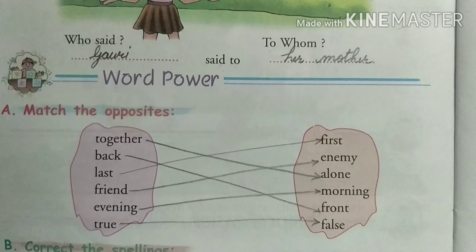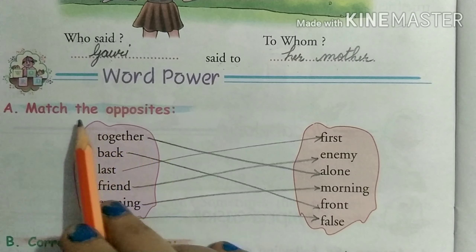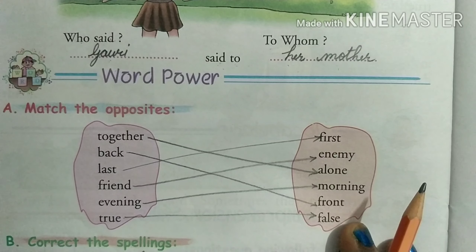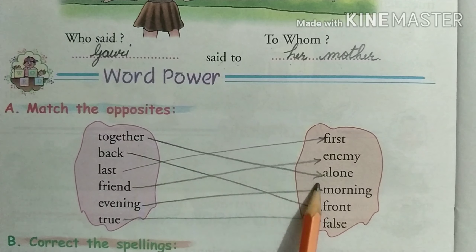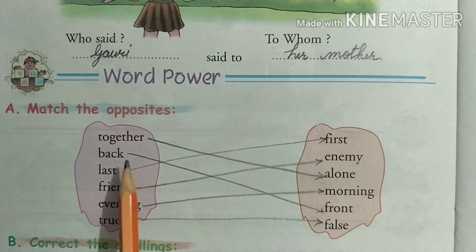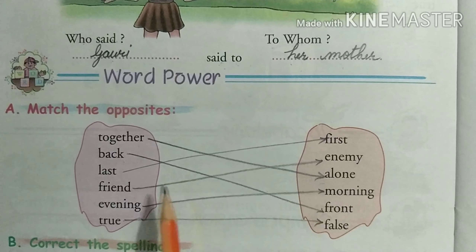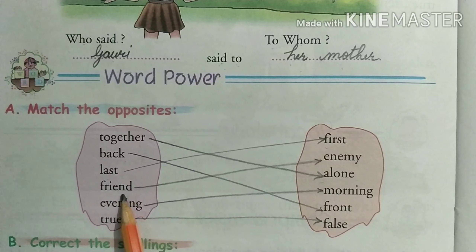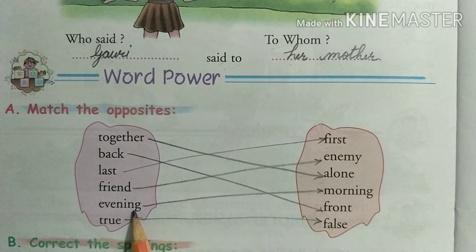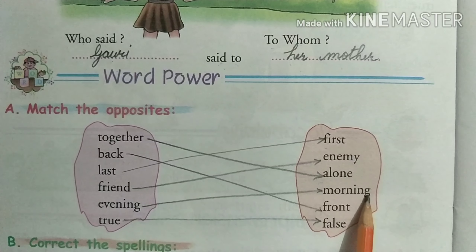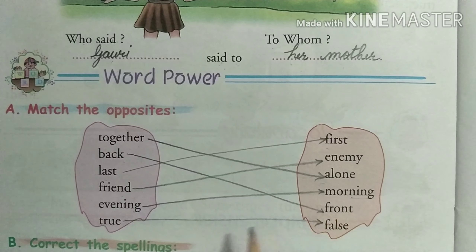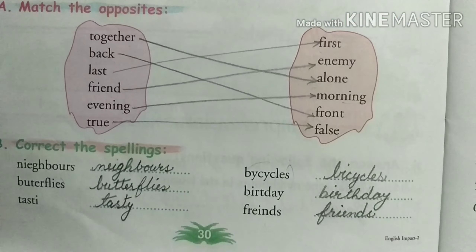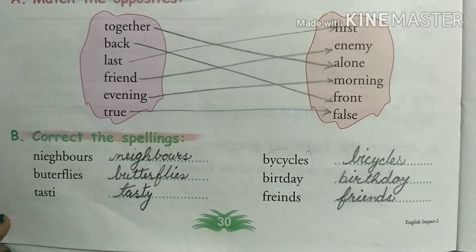Word power — match the opposites. Opposite words diye hue hain, inhe match karna hai. Together ka opposite: Alone. Back ka opposite: Front. Last ka opposite: First. Friend ka opposite: Enemy. Evening ka opposite: Morning. True ka opposite: False. Is tarah se match karna hai.